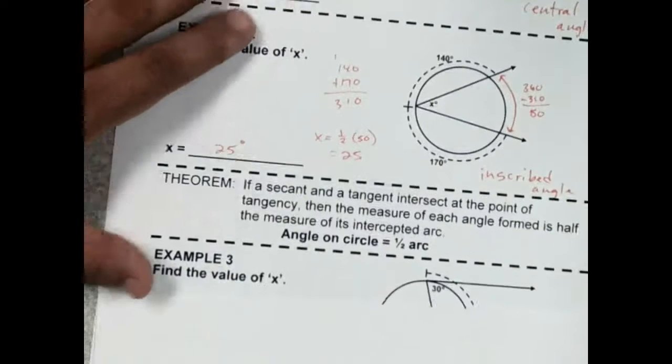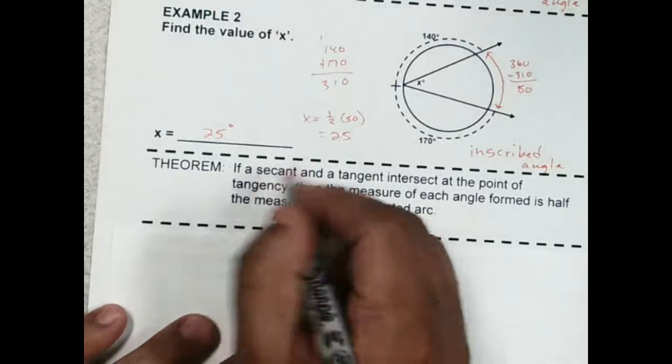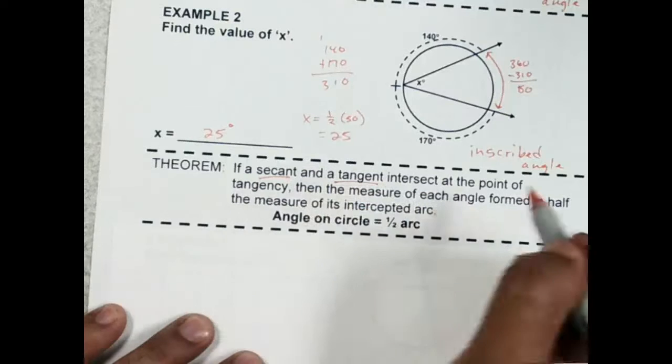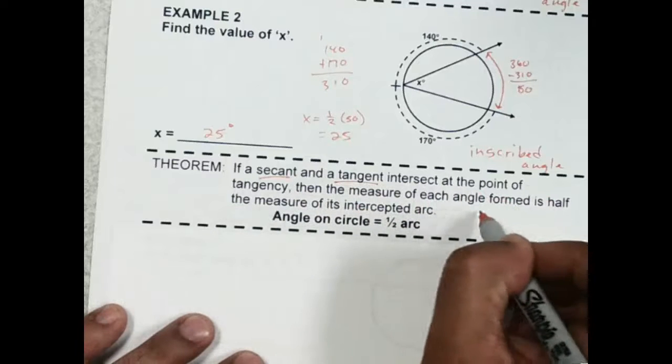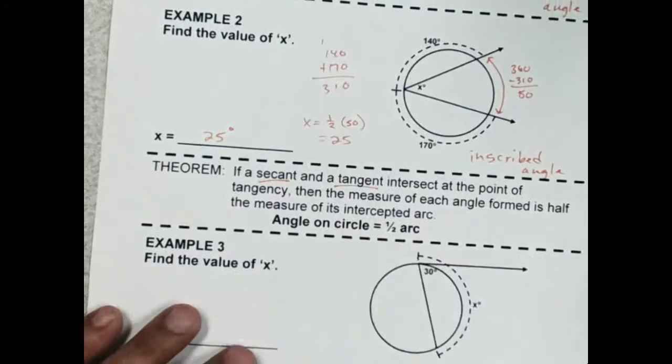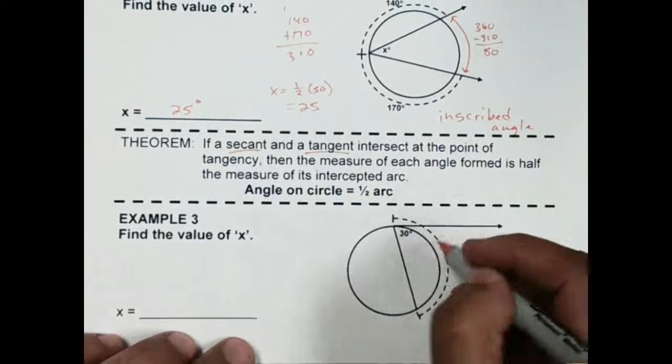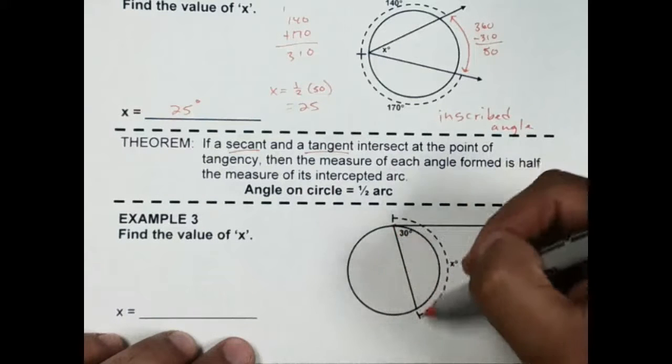All right, which is going to bring us up to the new theorem for today. If you have a secant and a tangent that intersect at the point of tangency, then the measure of each angle formed is half the measure of its intercepted arc. So looking at example 3, here's my tangent, here's my secant.